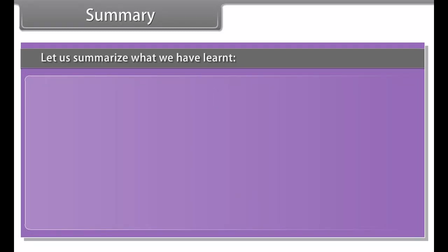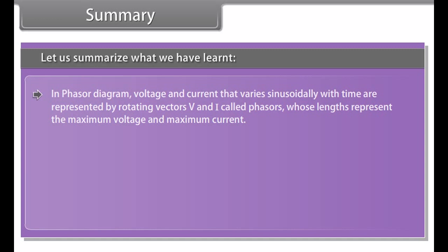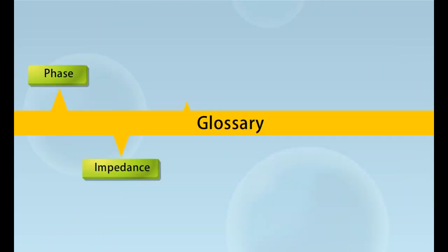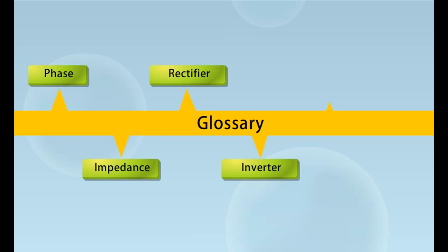Phasor diagram of a capacitive circuit: in an A.C. circuit, the current through a capacitor leads the voltage across its terminals by π/2. When voltage increases from A to B, the charge on the capacitor increases and reaches its full value at B; however, the current has a maximum positive value at the start of the charging process at A'. While the capacitor voltage decreases from B to C, charges flow out in a direction opposite to the charging current, as indicated by negative current from B' to C'. Thus voltage and current are one quarter wave cycle out of step.